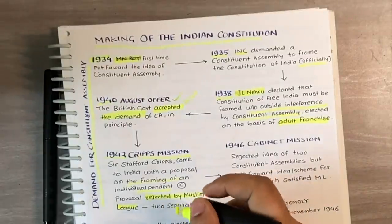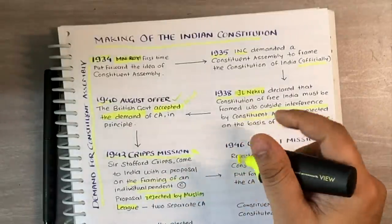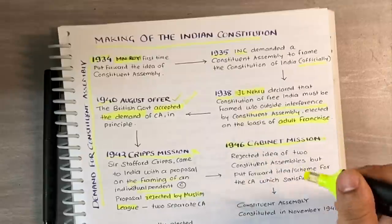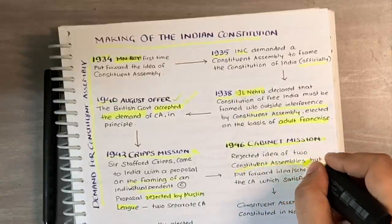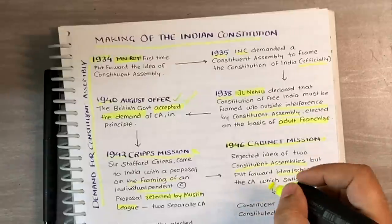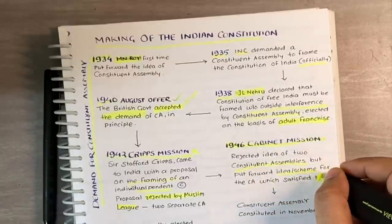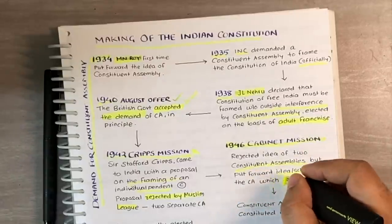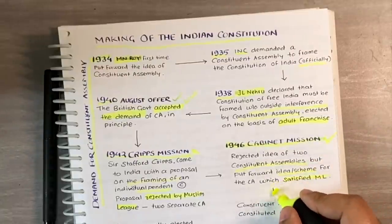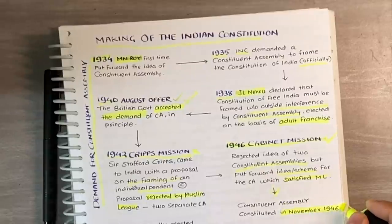The Cripps mission failed. Again in 1946, the Cabinet Mission came and it rejected the idea of two constituent assemblies, but put forward a scheme for the constituent assembly which more or less satisfied the Muslim League. On the basis of the Cabinet Mission, the constituent assembly was constituted in November 1946.